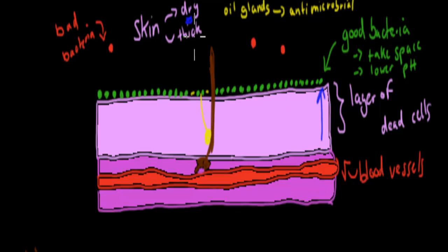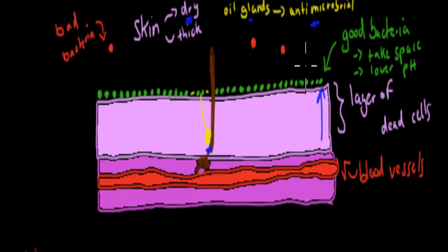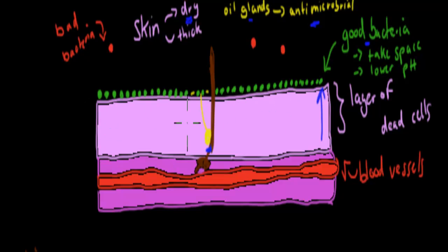Also, it's really dry as well, and that means a lot of the microbes can't grow because it's quite dry — dryness is not good for growth. It also has oil glands. These oil glands produce some antimicrobial chemicals which will kill off bad bacteria or pathogens. Also really important, we've got lots of good bacteria, which we call our microflora. It's just a layer of good bacteria that inhabit our top layer of skin, and what they do is take away space from the bad bacteria. They will also lower the pH, which will kill bad bacteria that try to colonize the skin.